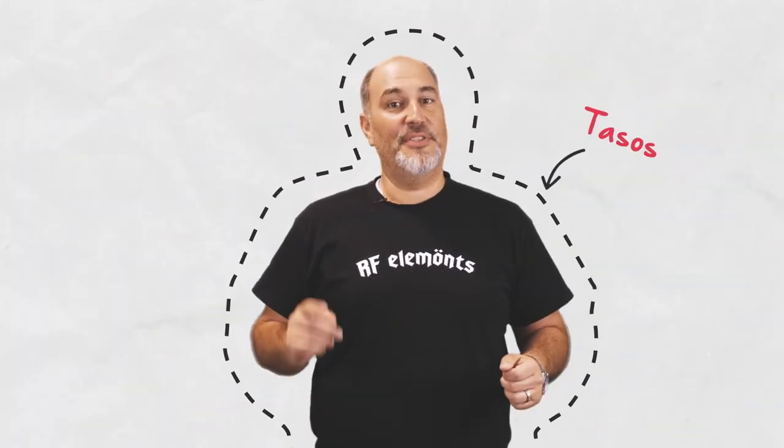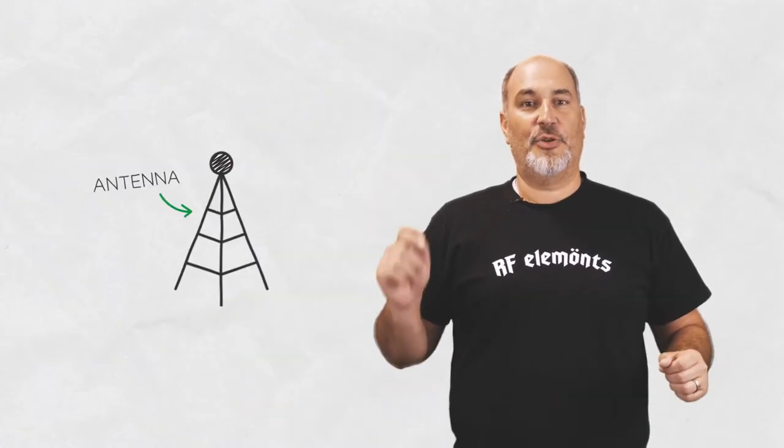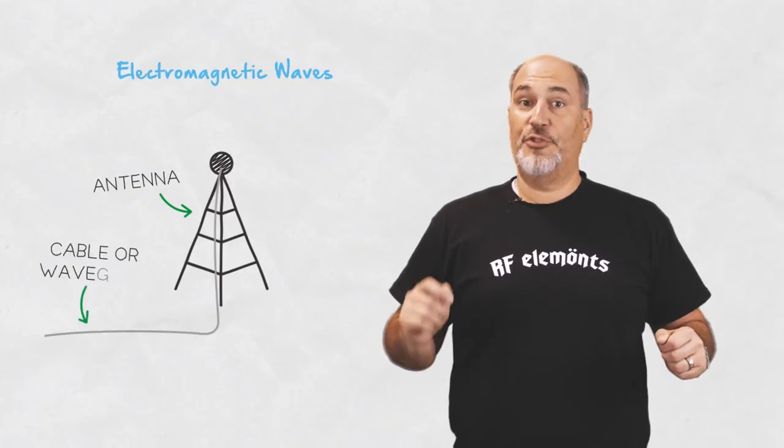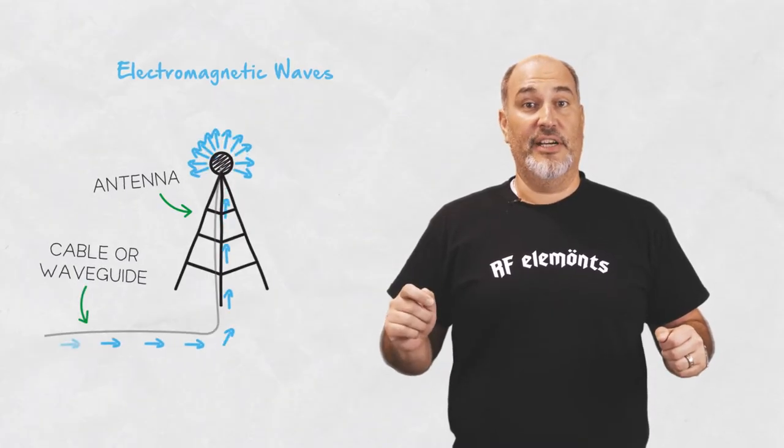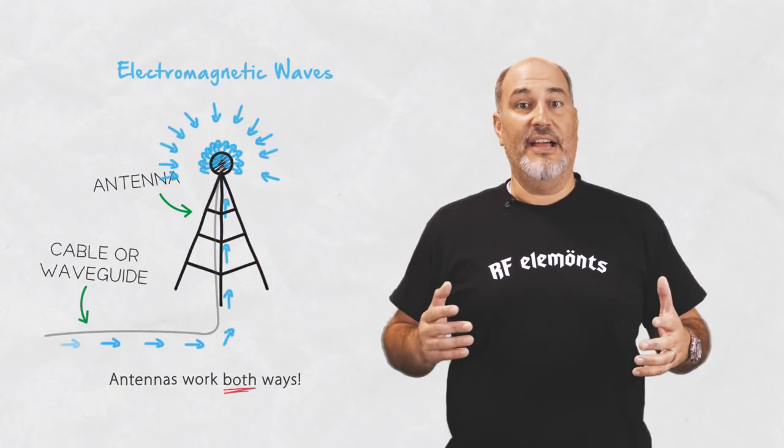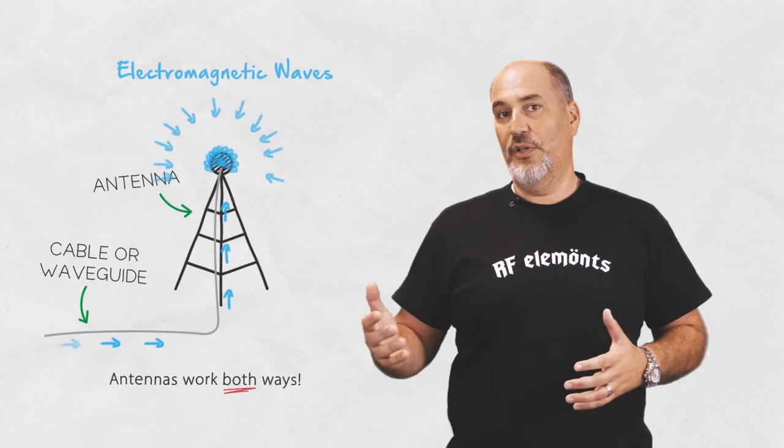Hi everybody, this is Tossos with RF Elements and today we'll be talking about what's an antenna. An antenna is a device that transmits and receives electromagnetic waves. It's an interface between a wave traveling in a cable and flying through the air. It's also important to understand that antennas work in both directions. You can't have an antenna that only receives or only transmits.